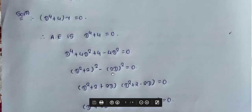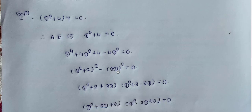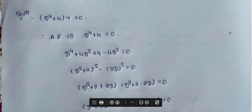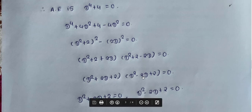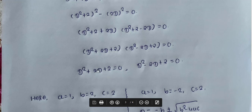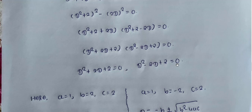Using the identity a² - b² = (a+b)(a-b), we factor: (d² + 2 + 2d)(d² + 2 - 2d) = 0. Rewriting: (d² + 2d + 2)(d² - 2d + 2) = 0. Setting each factor to zero: d² + 2d + 2 = 0 and d² - 2d + 2 = 0.